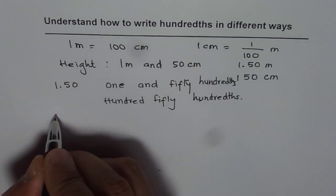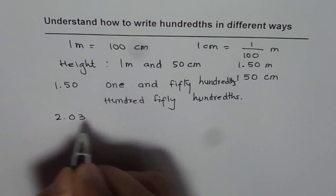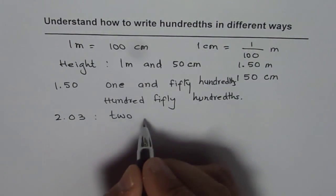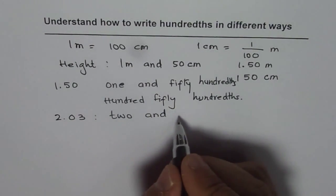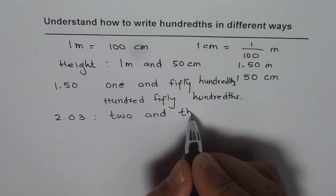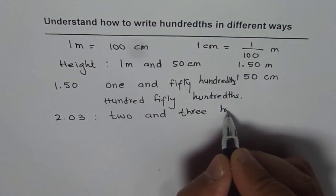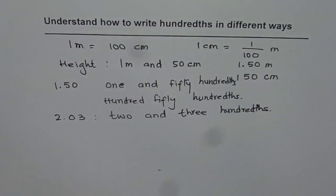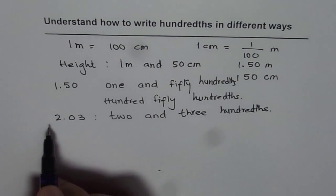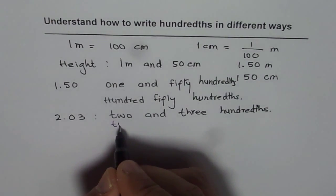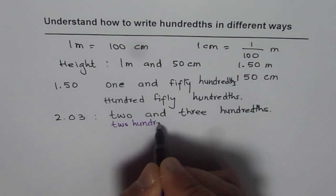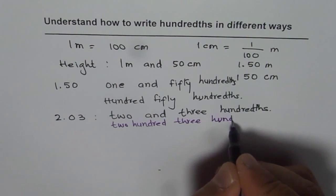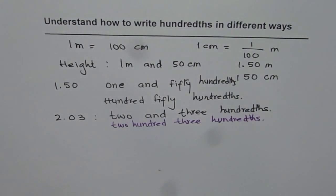For example, if I have the number two point zero three, I could write this as two, then the decimal point, and since three is in the hundredths place we say three hundredths. So this number is two and three hundredths. I could also say that this number is two hundred three hundredths. Both are the same thing.